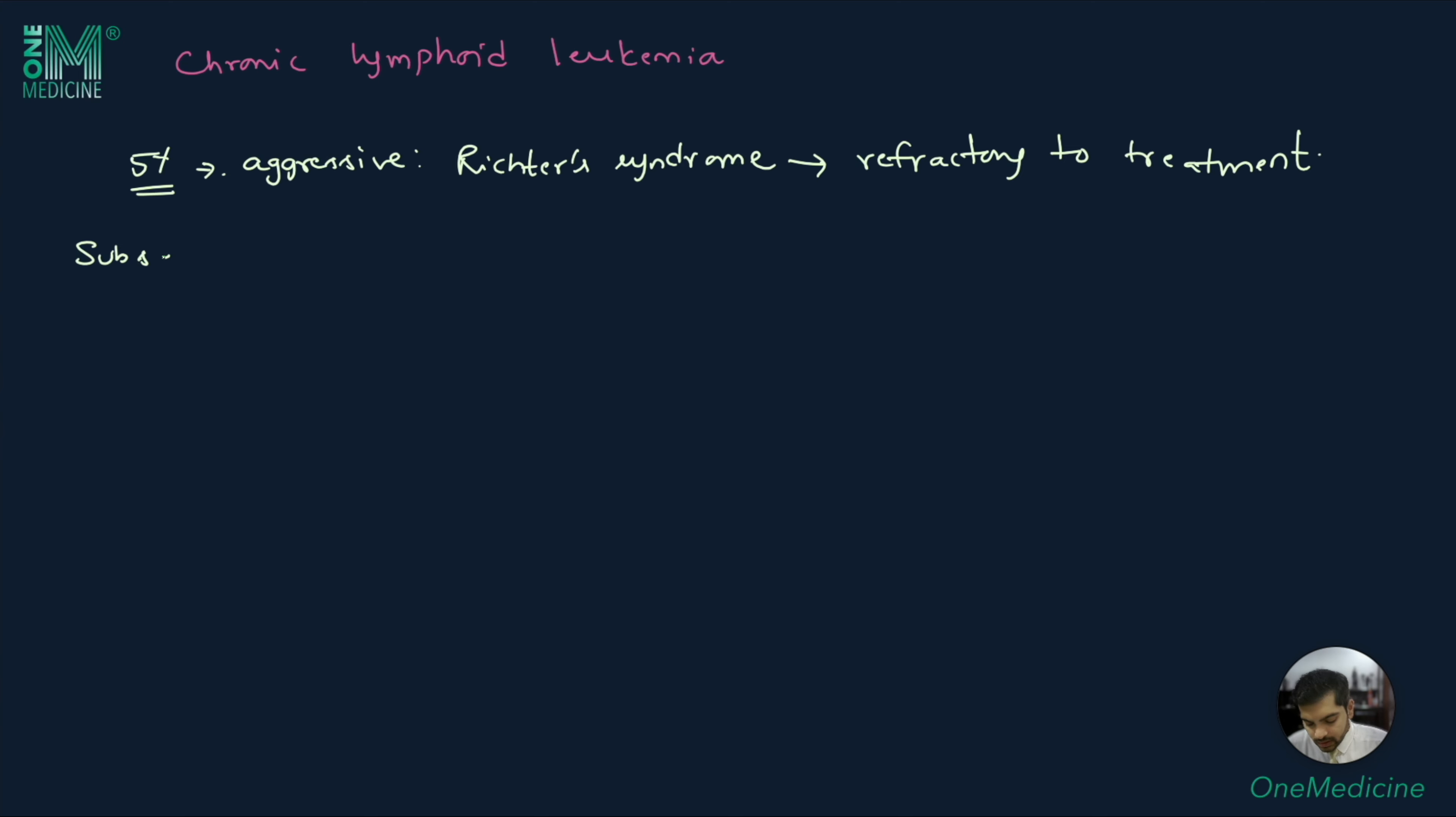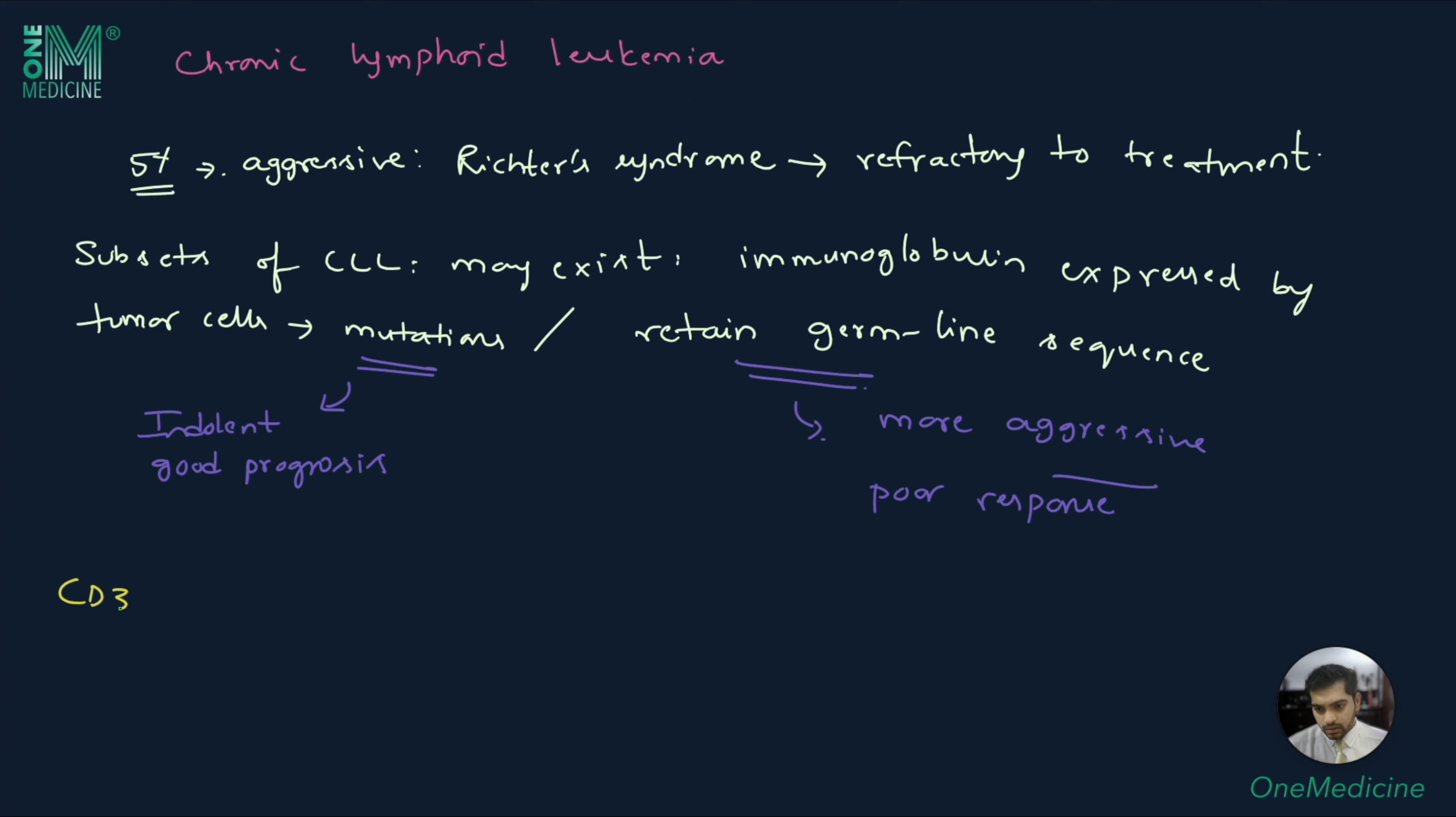There are a few subsets of chronic lymphoid leukemia which may exist based on whether the immunoglobulin expressed by tumor cells contain mutations or retain germline sequence. The cells that contain mutations are more indolent and carry good prognosis, whereas the cells that retain the germline sequence are more aggressive and have poor response to therapy. CD38 positive tumor cells also have poor prognosis.